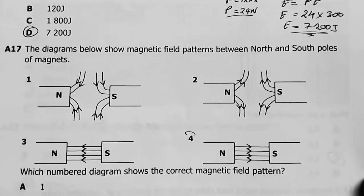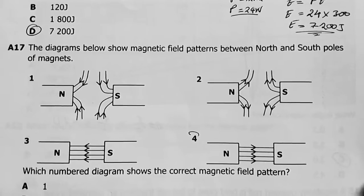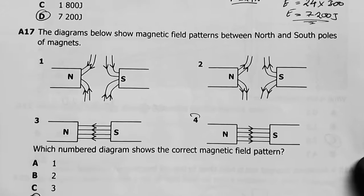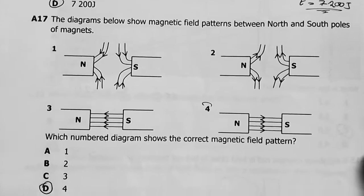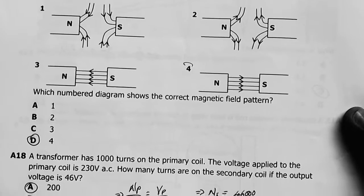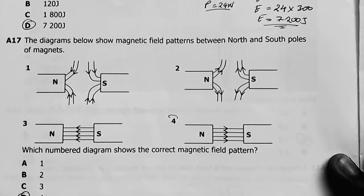Question 17: The diagram below shows magnetic field patterns between north and south poles of magnets. Which diagram shows the correct magnetic field patterns?